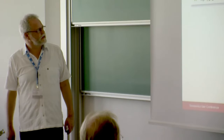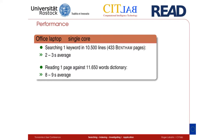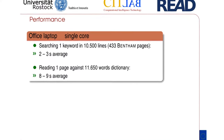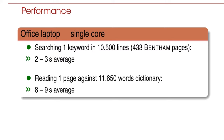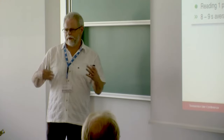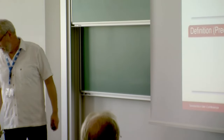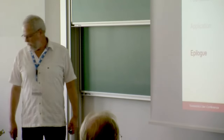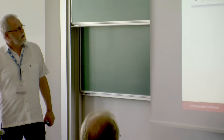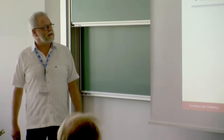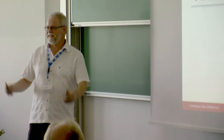On a standard laptop with GPU, processing 433 Benson pages takes 2 to 3 seconds on average for searching. Reading a complete page and comparing against an 11,000-word dictionary takes 8 to 9 seconds. My time is nearly up, and I leave you with open questions: Are we working on realistic query types? What is the realistic size of the data corpus you work with? And what is an acceptable query response time — is 30 seconds acceptable, or do you expect more?